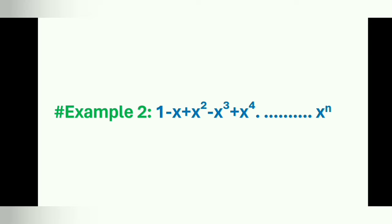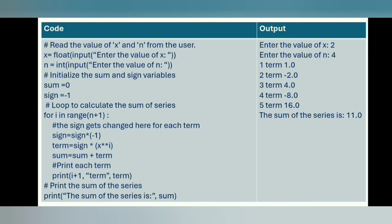Example 2. Write a Python script to find the sum of the series 1 - x + x² - x³ and so on, where x and n are numbers input by the user, x representing the base and n representing the power till the series would go. First, we get the value of x and n from the user using the input function. x is a float type variable and n is an integer type variable. We initialize the variable sum to 0 and the variable sign to -1.